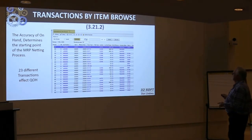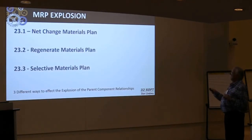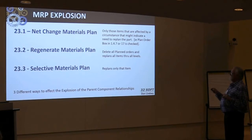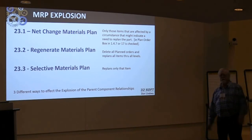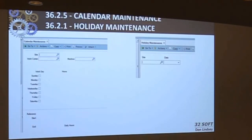The three types of MRP explosions are: net change (23.2, run nightly), regeneration (23.3, run every weekend — wipes out all planned orders and replans everything), and selective (23.1, planners can run five times a day as needed). If you're changing bills of material or formulas regularly, run the low-level code update, because this affects where in the process MRP does its low-level calculations. Also make sure your shop calendars and holidays are set — MRP doesn't work well without them.